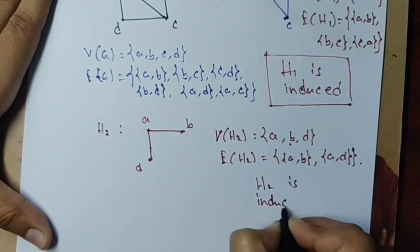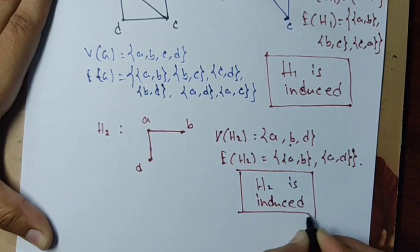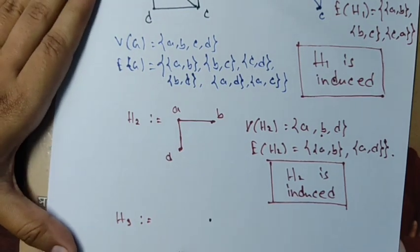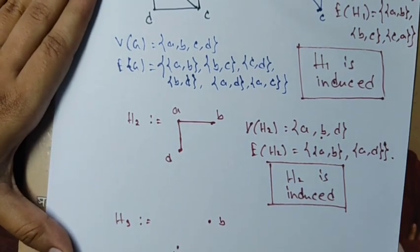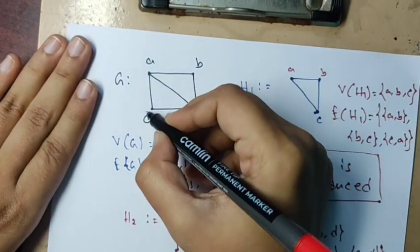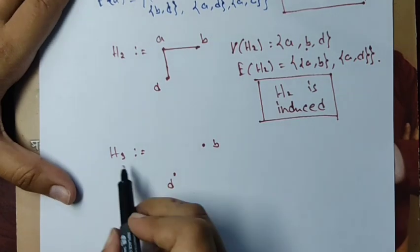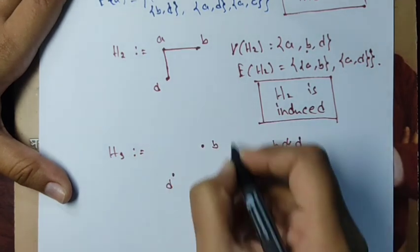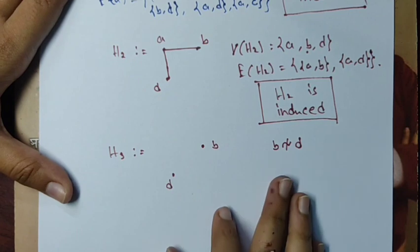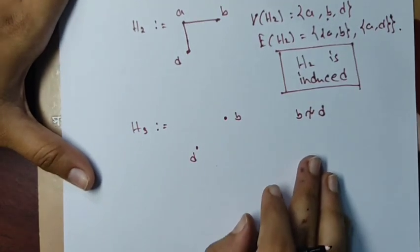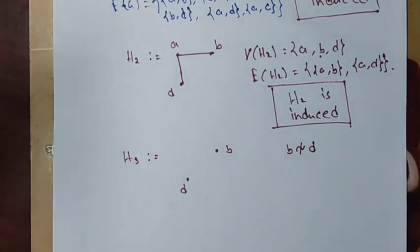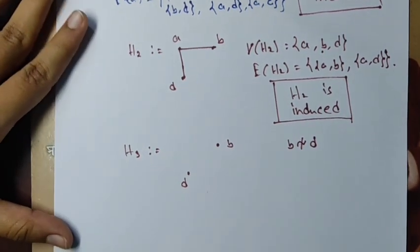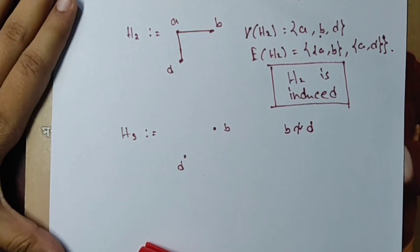Now check H3 with vertices B and D. The edge BD is not in G, so H3 will be a subgraph with B and D not adjacent in H3 as well. This is also an induced subgraph. We can check more examples on this topic: first verify whether a graph is a subgraph, then check whether it is an induced subgraph.